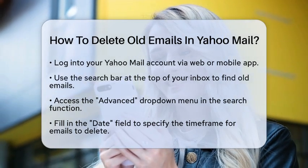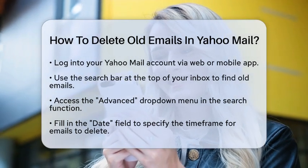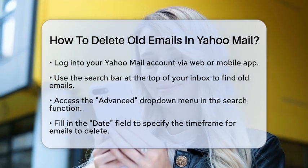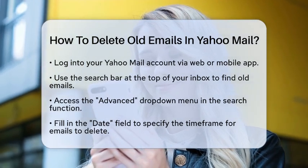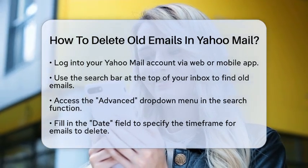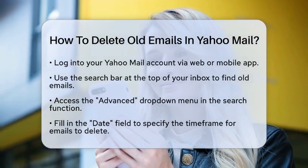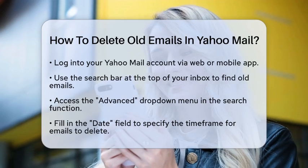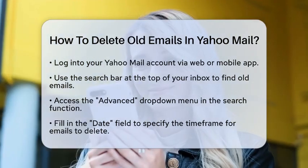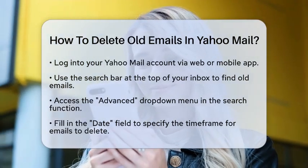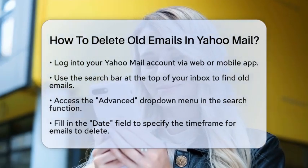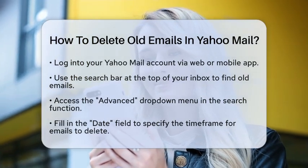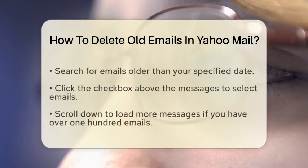First, log into your Yahoo Mail account either on the web or through the mobile app. Once you are in, you can use the search function to find those old emails. At the top of your inbox, you will see a search bar. Click on the Advanced drop-down menu. Here, you can fill in the date field to specify the time frame for the emails you want to delete.